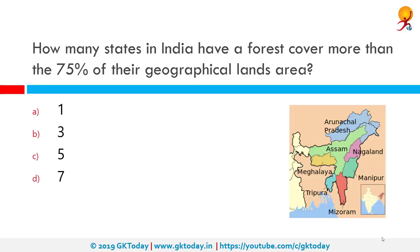How many states in India have a forest cover of more than 75% of their geographical land area? There are three states: Arunachal Pradesh, Manipur, and Nagaland.